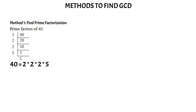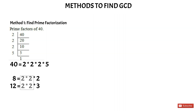Now let us look at the example of 8 and 12. How can we find the GCD between 8 and 12? The prime factorization of 8 is 2 × 2 × 2, and the prime factorization of 12 is 2 × 2 × 3. We have 2 × 2 common between both 8 and 12, which means 2 × 2 is 4. So 4 is the GCD between 8 and 12. This is one way of finding the GCD between two numbers.